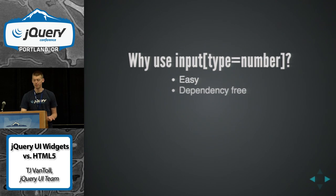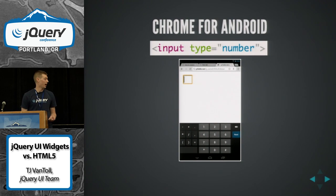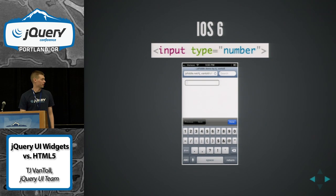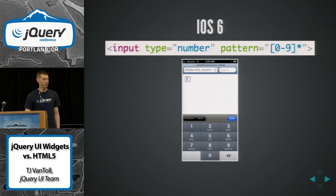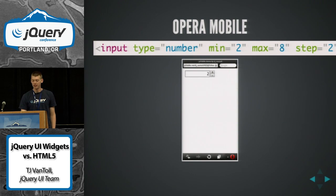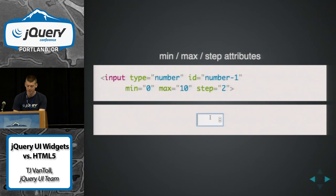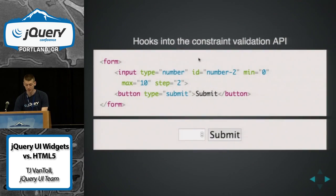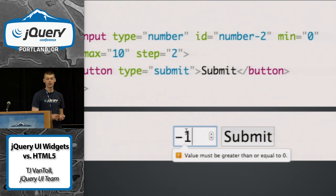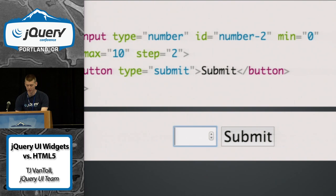The reasons to use the number picker are basically the same — it's very easy to use, dependency-free. Mobile browsers can optimize the keyboard for you. In Chrome for Android, it'll pop up a number keyboard instead of the standard QWERTY keyboard. In iOS, you get the number picker, and if you like the dialer, you can give it a pattern attribute and get a really nice input for the user. The number picker also gives you integration with the min, max, and step attributes — the browser will automatically step by values of two and restrict at zero and ten. Those also hook into the constraint validation API, so if you go outside the specified bounds, the browser will prevent the form from being submitted and give the user an error message automatically, dependency-free.